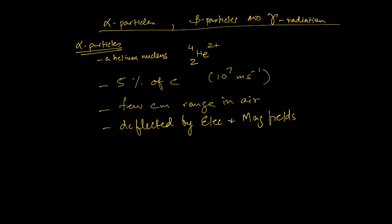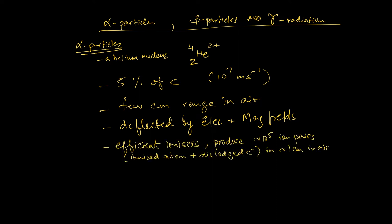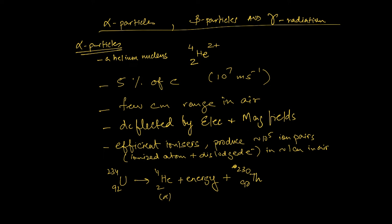Because they are constantly interacting with and ionizing surrounding atoms, alpha particles lose energy relatively quickly and therefore have low penetrating power — which is why they only have a range of a few centimeters in air. When the nucleus of an atom emits an alpha particle, we say it has undergone alpha decay. As a result, the nucleus loses two protons and two neutrons. Taking uranium-234 as an example, when it emits an alpha particle, the remaining nucleus has 90 protons and 230 nucleons — and this turns out to be thorium. So uranium is the parent nuclide and thorium is the daughter nuclide.